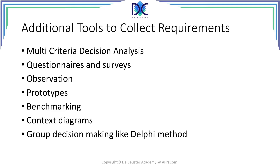We still have multi-criteria decision analysis, which can help us to collect requirements. There are also questionnaires and surveys we can send to people, certainly when you're doing a project for a company which involves a lot of people. We had a project like that within AT&T when we had to move our offices to a new location, and questionnaires and surveys were conducted to find out what solutions the people would prefer. We can also look at observation, make prototypes to see if they work with our requirements, or do benchmarking — comparing ourselves with other companies to set our requirements relative to our competitors.